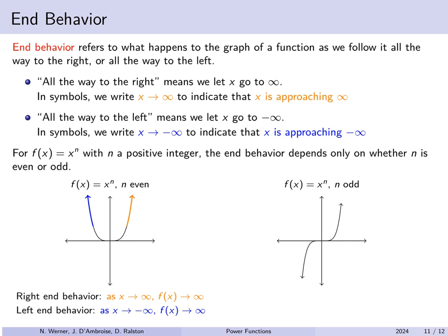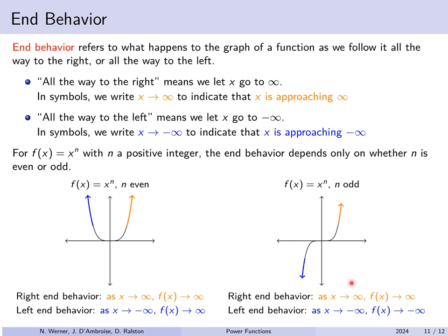To summarize end behavior: for even powers, the graph goes up on both sides. For odd powers, it goes up on the right and down on the left. As x → ∞, f(x) → ∞ in both cases, but as x → -∞, f(x) → ∞ for even n and f(x) → -∞ for odd n.